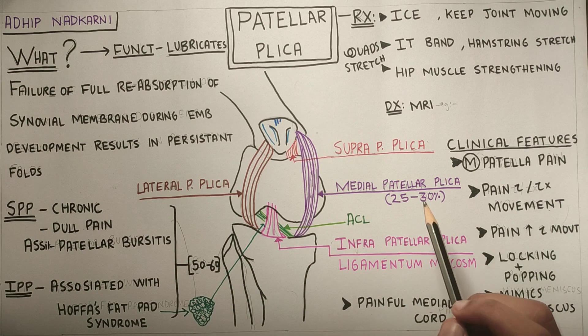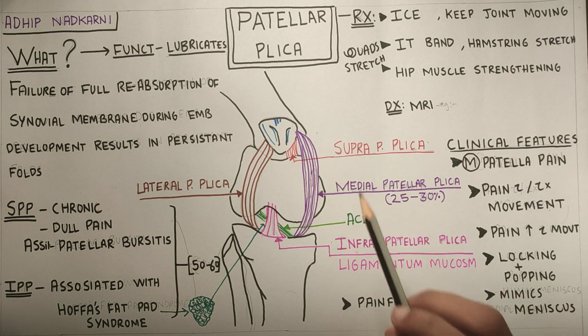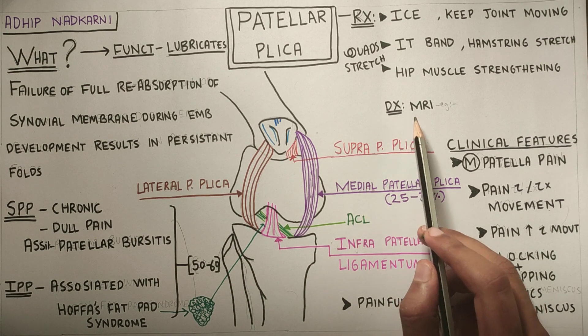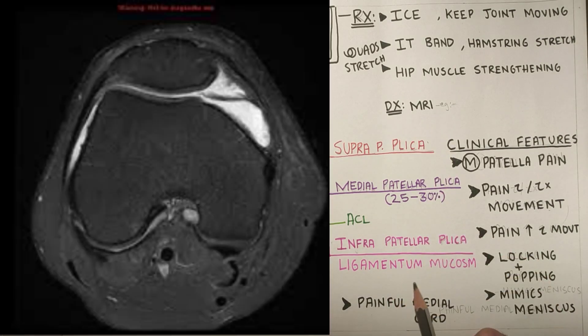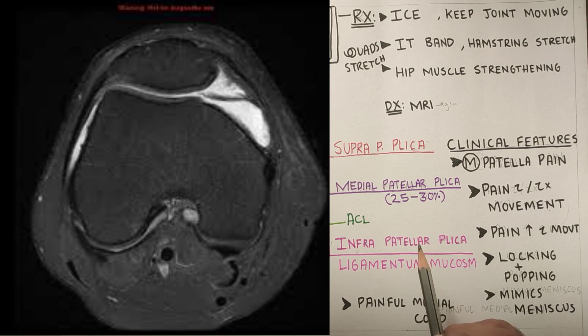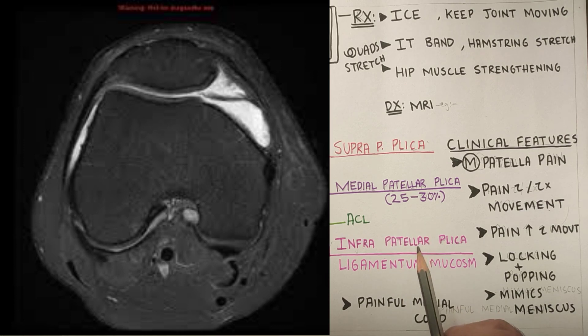Patellar plica syndrome is mostly confirmed with MRI. In MRI you can see a wide dense structure, and this is the irritated patellar plica.